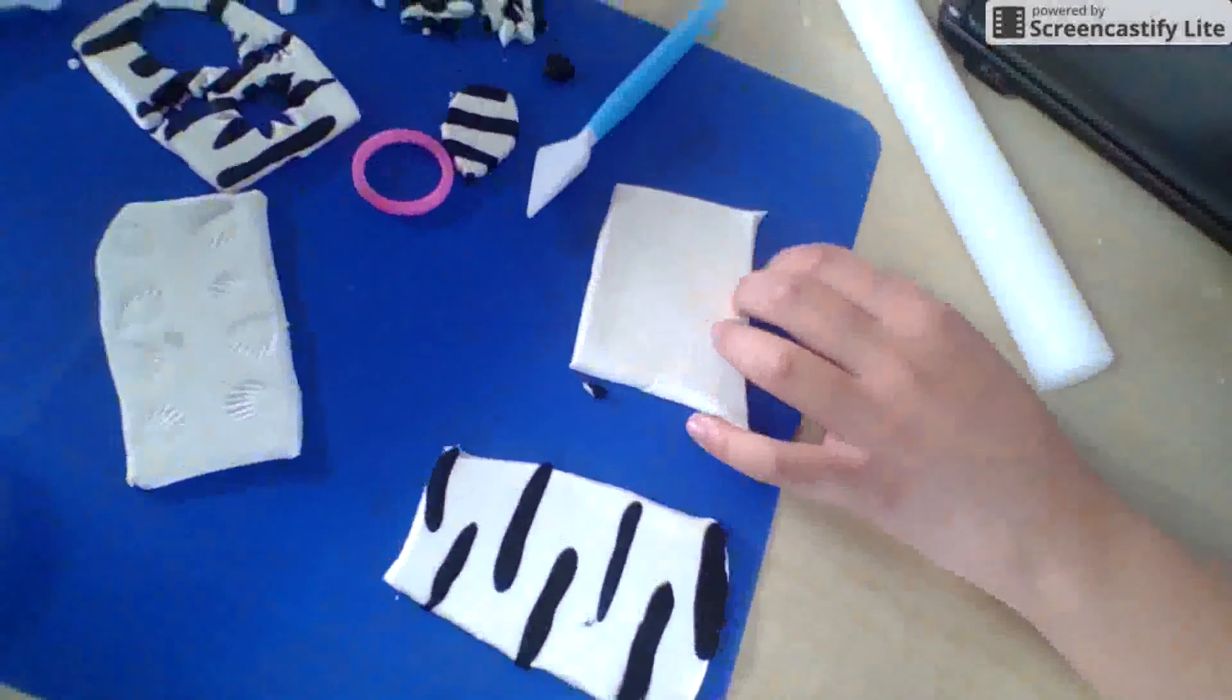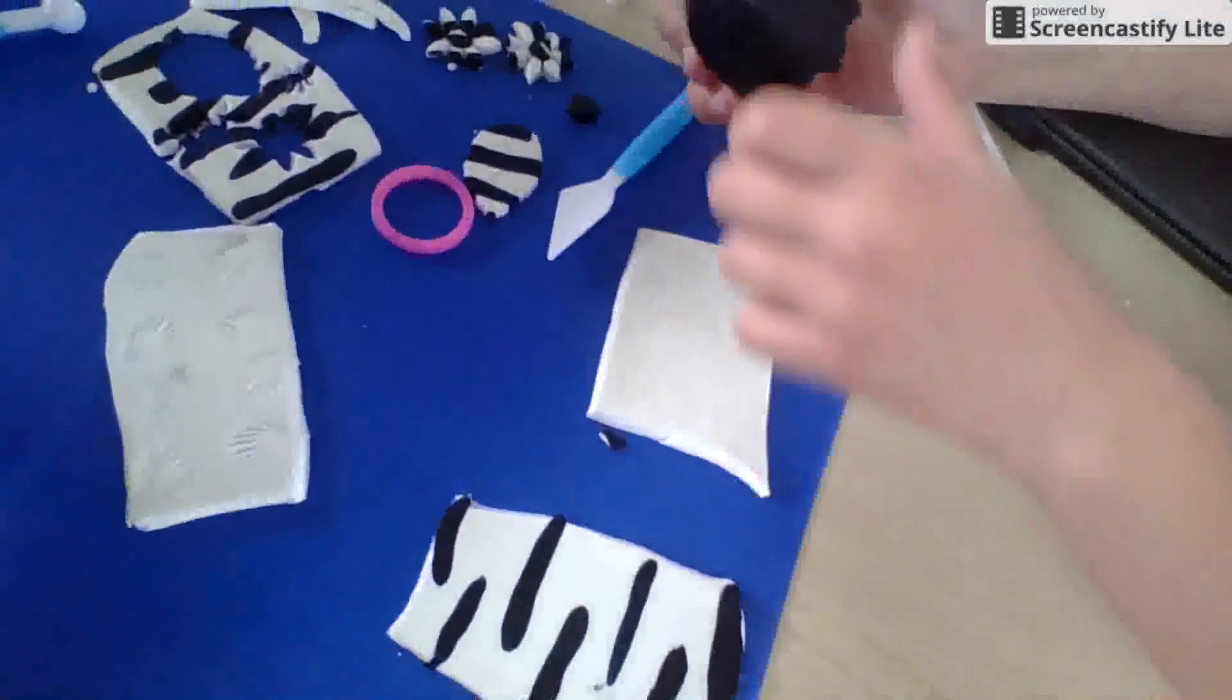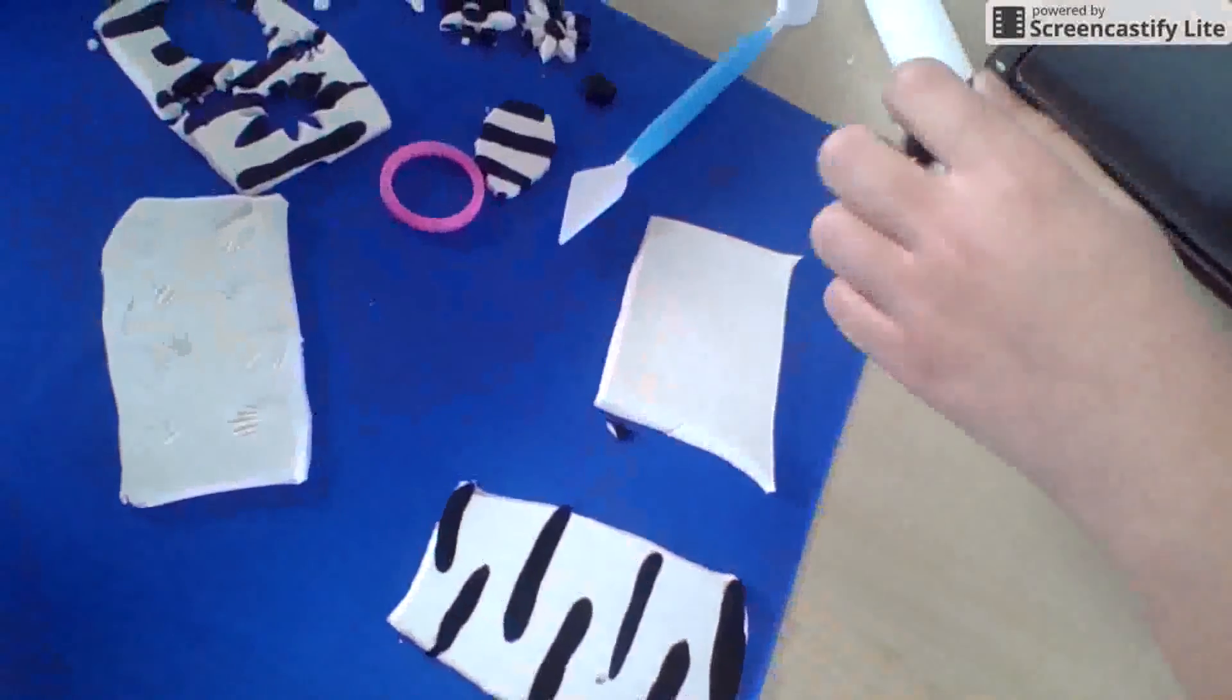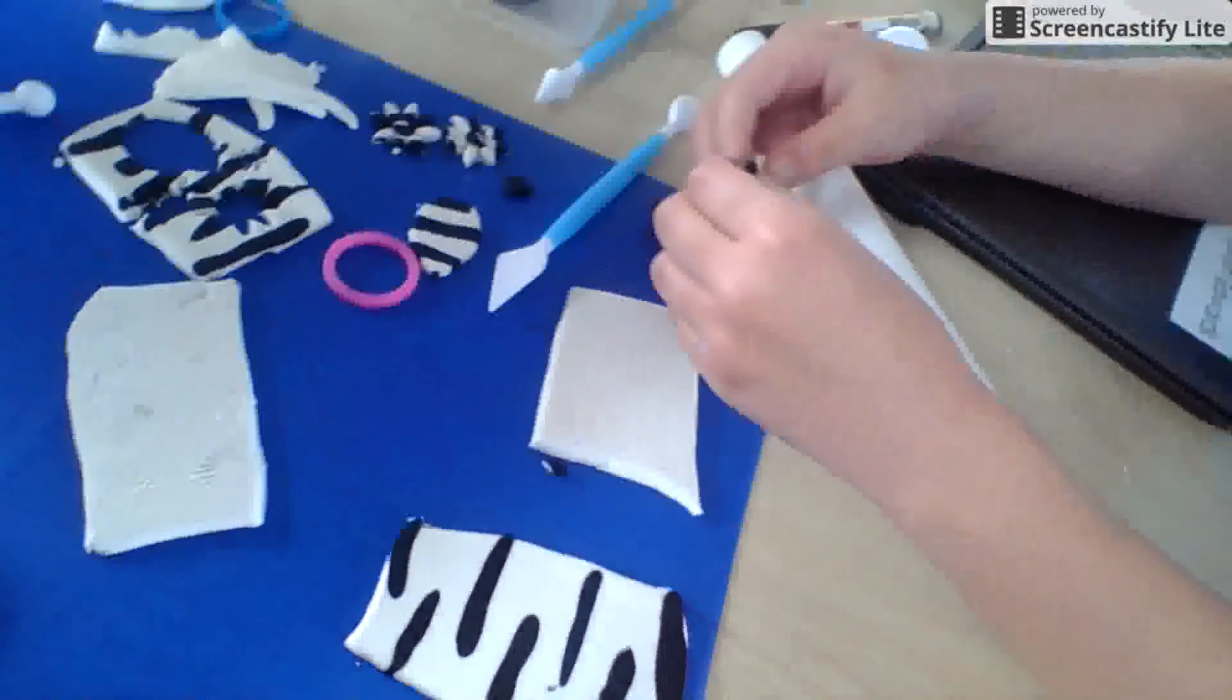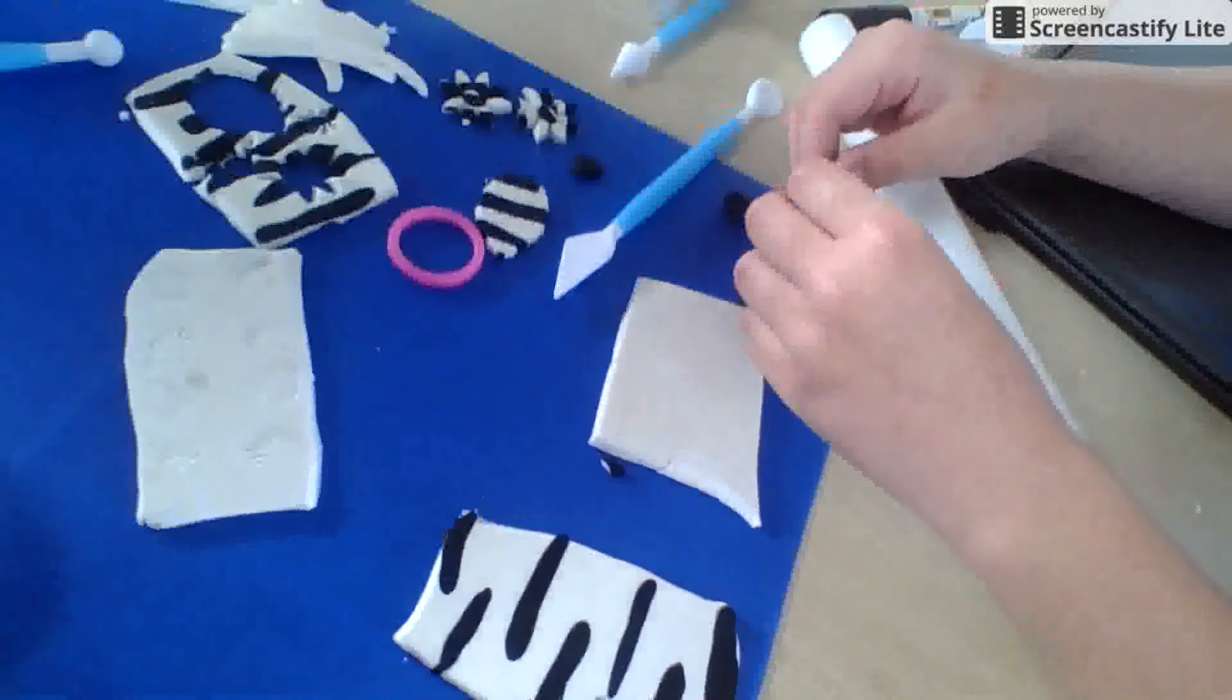So cut it into a square and then you grab a blob of whatever color fondant that you want. But if you want it to be like Zebra then black and white is the best.